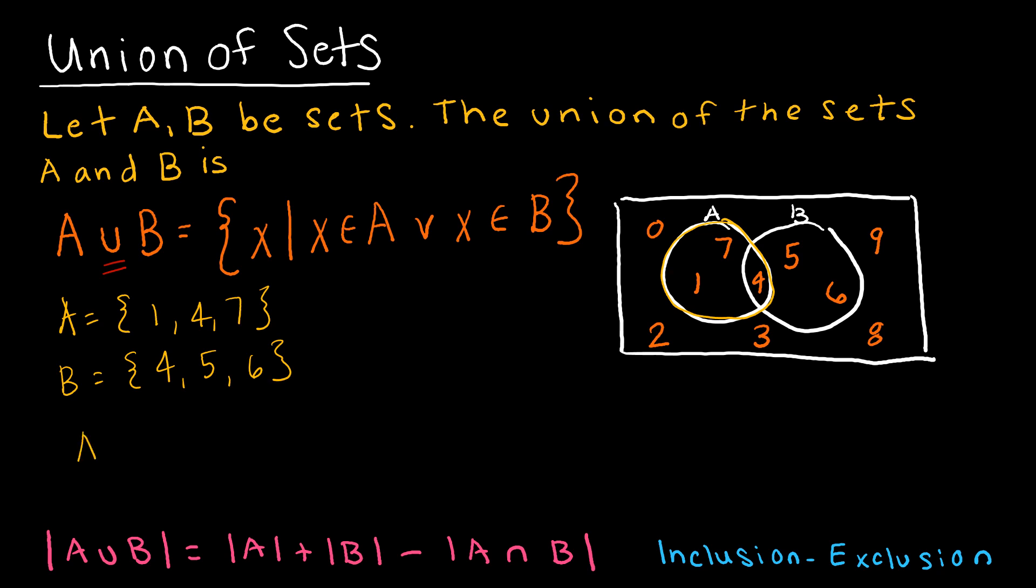And so A union B would be 1, 4, and notice 4 is listed twice, but I'm only going to list it once, 5, 6, and 7. So using my picture, it's essentially everything here in either circle, including this part in the middle that's contained in both. So 1, 4, 5, 6, 7 would be all of the elements in the union. So we're looking for anything that is in one or the other. So again, you can think of this as an or.